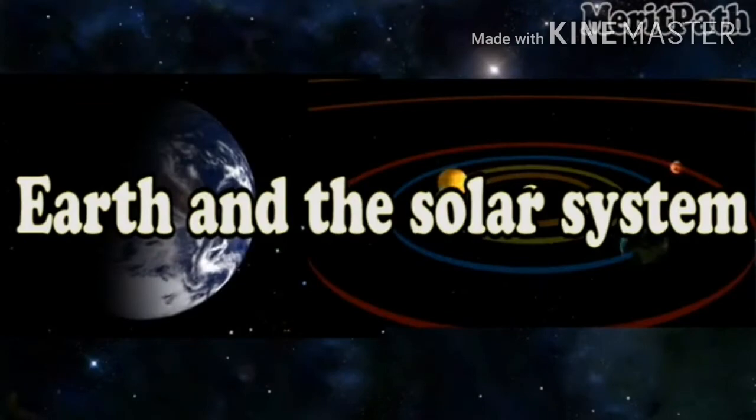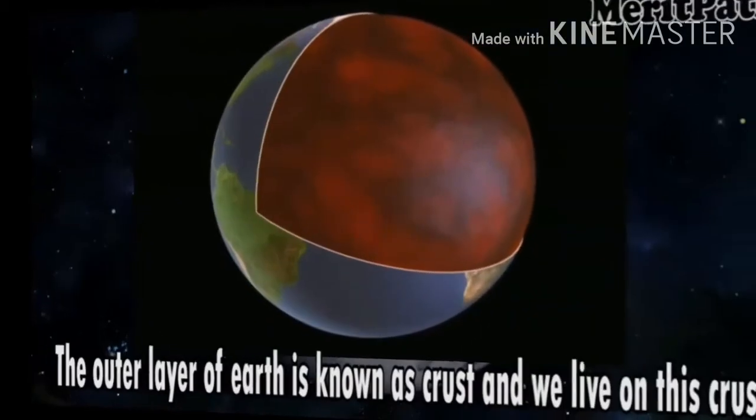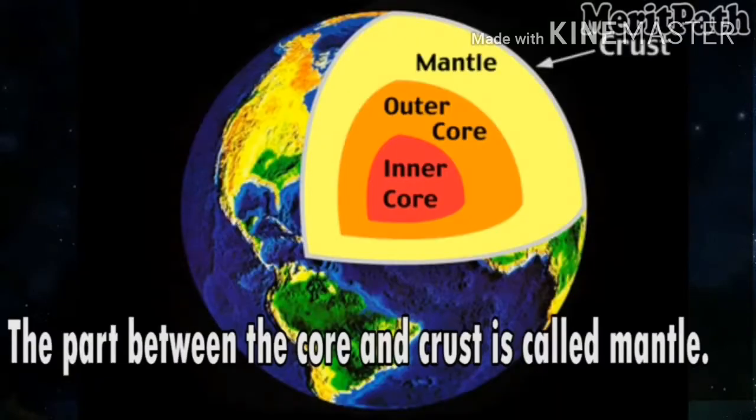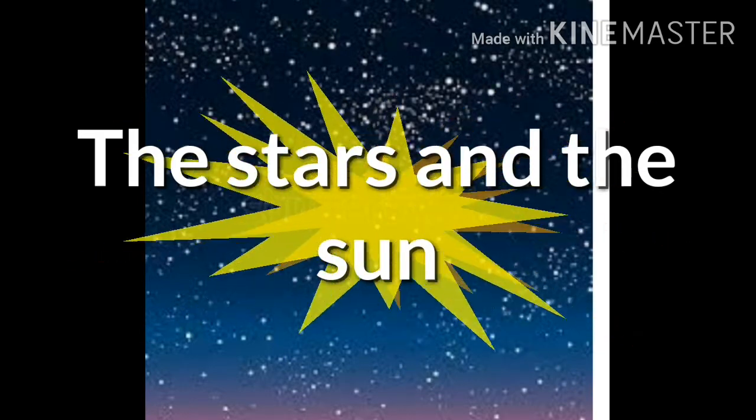The planets form our solar system. We will discuss what the inside of the earth is like, and we will differentiate between the two motions of the earth, and how day and night and seasons are caused. So first, we will discuss about the stars and the sun.